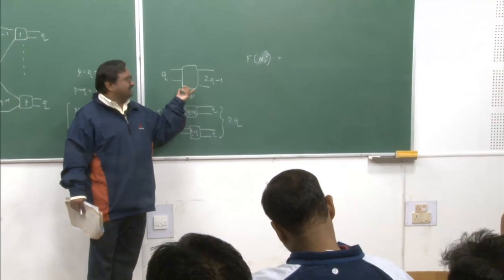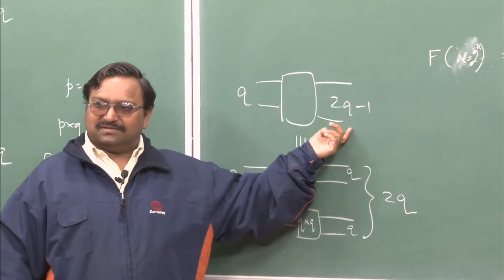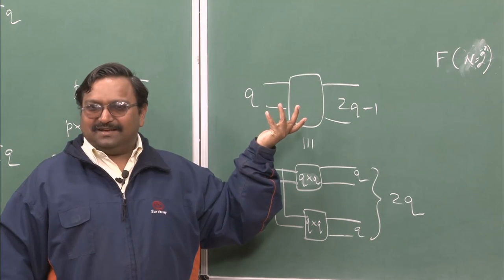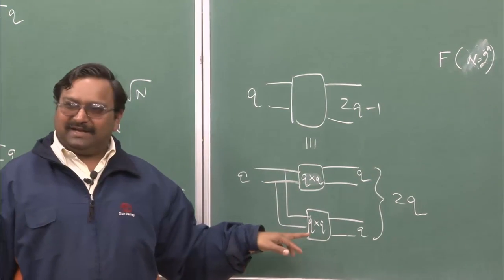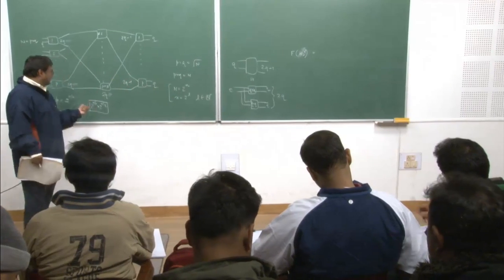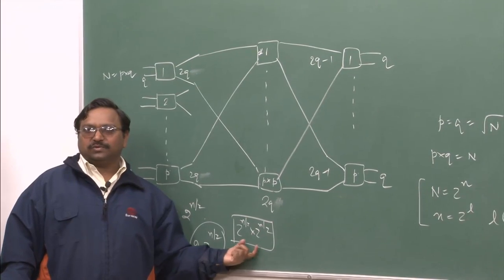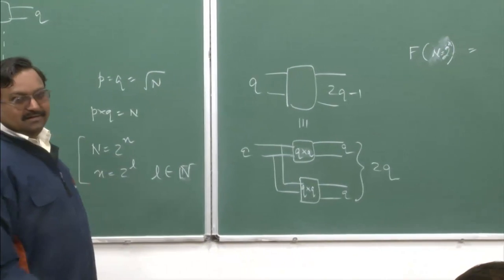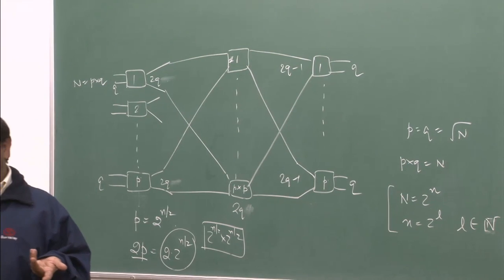I require q inputs and 2q−1 outgoing ports, and it has to be strictly non-blocking. I am trying to remove 1 and duplicate. What I require is this basic building block, and just using this, I can create a strictly non-blocking switch of size n×n = 2^n × 2^n. So I can build up a recursion formula for that purpose.